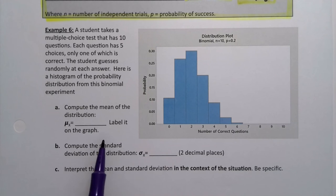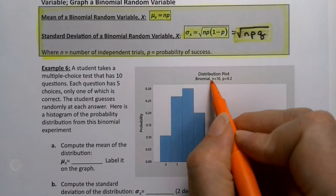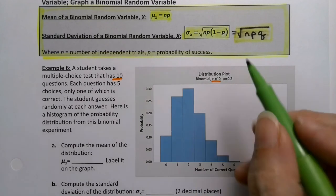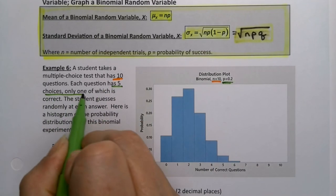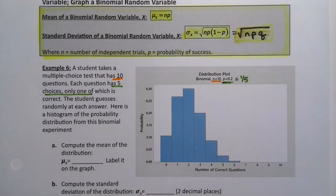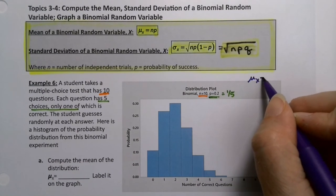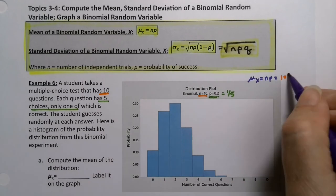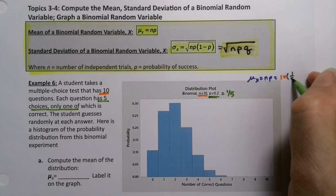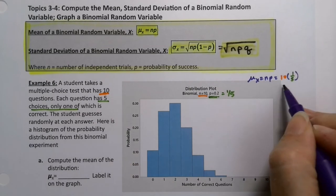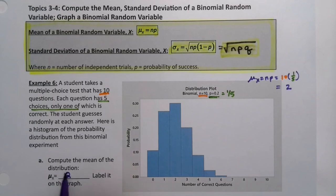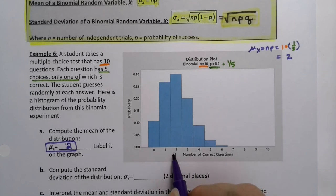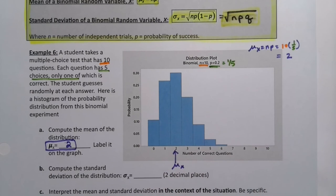We're going to compute the mean of the distribution and label it on the graph. I didn't give any space because it's so easy. N, you'll see right here, is 10, and P, the probability of success, is 0.2 because it's one-fifth. So the mean, μ of X, is NP, which is 10 times one-fifth, or 10 times 0.2, which is 2. The answer is 2, right there on the graph.